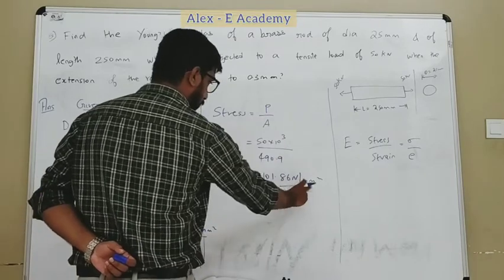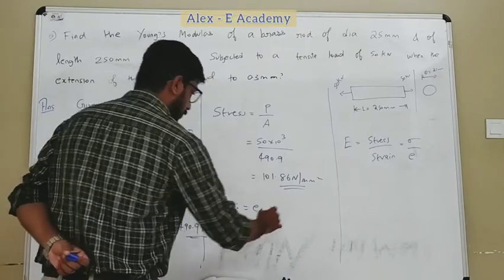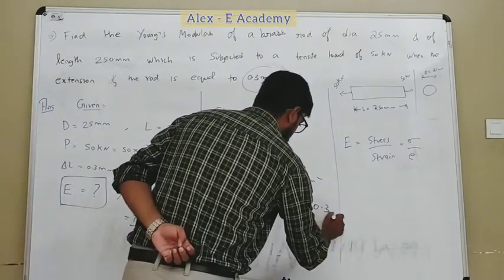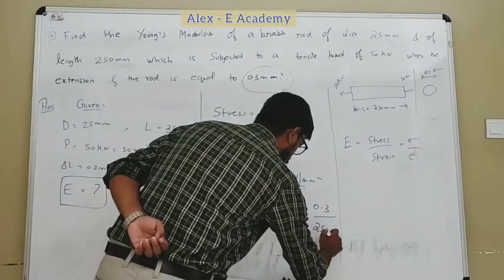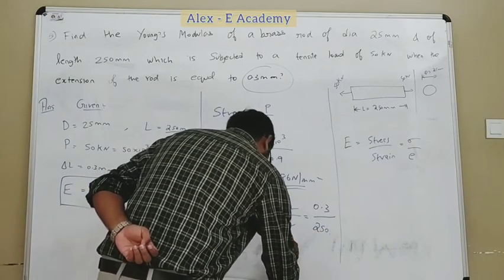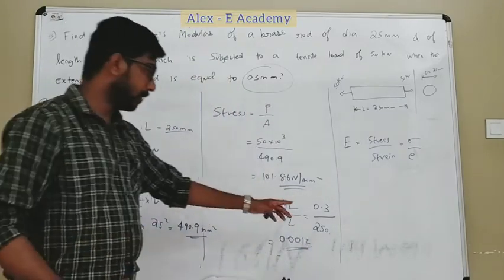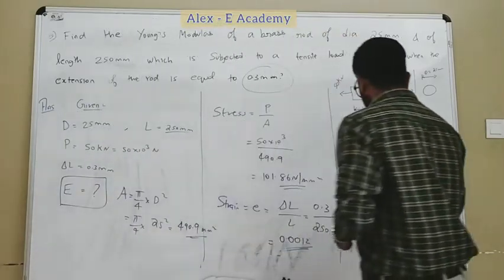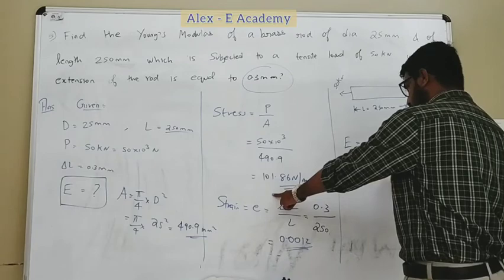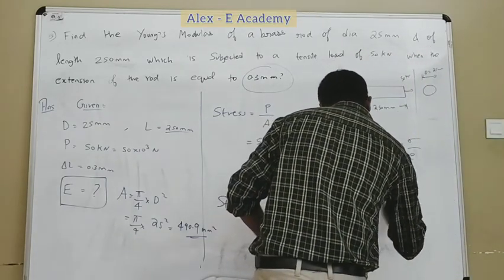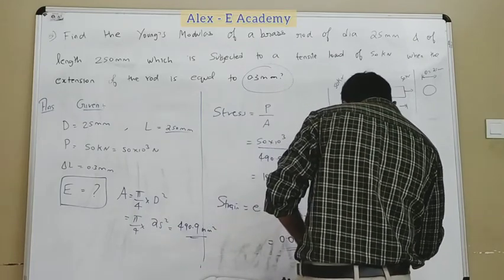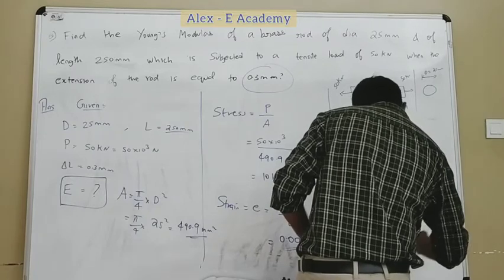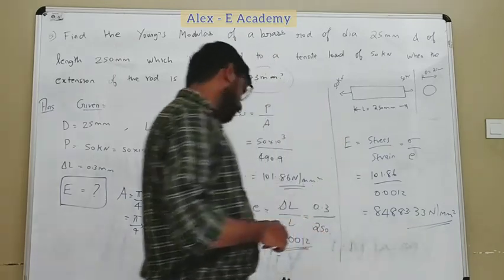Strain is equal to change in length divided by original length. The extension is 0.3 mm and the original length is 250 mm, so strain is equal to 0.3 divided by 250, which equals 0.0012. Finally, Young's modulus E is equal to stress divided by strain: 101.86 divided by 0.0012, which gives 84883.33 Newton per mm².